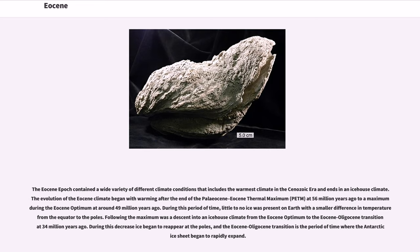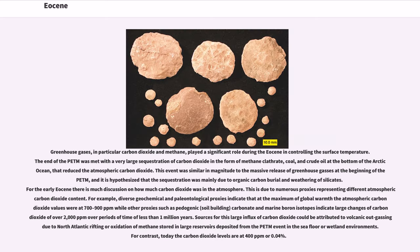During this period of time, little to no ice was present on Earth with a smaller difference in temperature from the equator to the poles. Following the maximum was a descent into an ice house climate from the Eocene Optimum to the Eocene-Oligocene transition at 34 million years ago. During this decrease, ice began to reappear at the poles, and the Eocene-Oligocene transition is the period of time where the Antarctic ice sheet began to rapidly expand. Greenhouse gases, in particular carbon dioxide and methane, played a significant role during the Eocene in controlling the surface temperature. The end of the PETM was met with a very large sequestration of carbon dioxide in the form of methane clathrate, coal, and crude oil at the bottom of the Arctic Ocean.